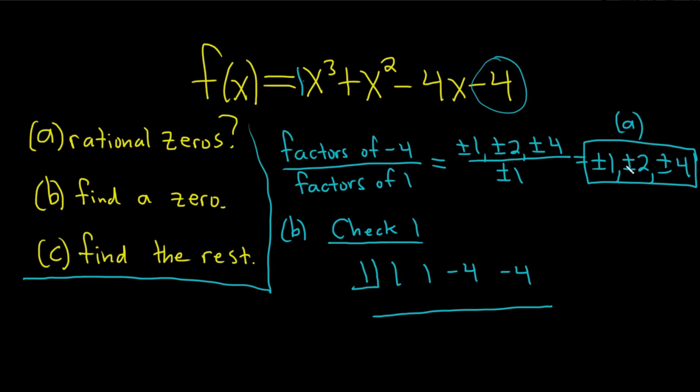If we don't get 0, then we're just going to pick a different number. So it's kind of like a trial and error type thing. You just pick one of these, write it down, write down your coefficients, and then try to use synthetic division.